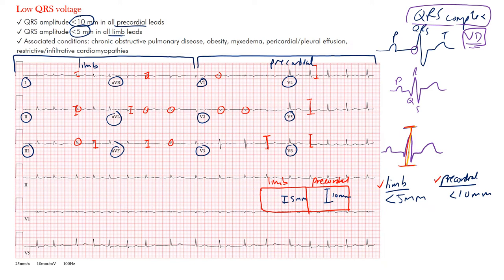So the criteria you want to look for: low QRS voltage met in both the limb and precordial leads. Less than five millimeters in all limb leads and less than ten millimeters in all precordial leads.